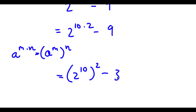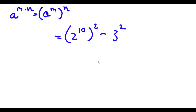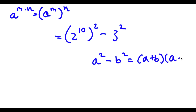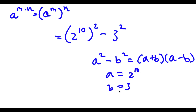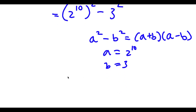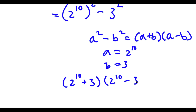And 9 is the same thing as 3 squared. So now if I have something in the form a squared minus b squared, this is equal to a plus b times a minus b. So in this case, a is equal to 2 to the power of 10 and b is equal to 3. So now I have 2 to the power of 10 plus 3, times 2 to the power of 10 minus 3.